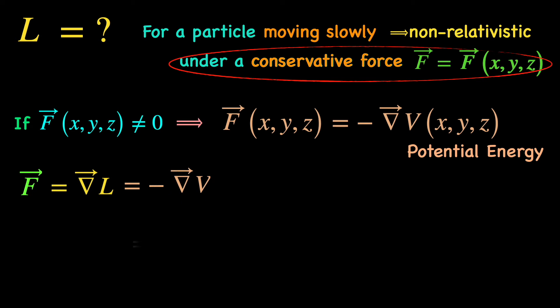So, a conservative force is given by the gradient of the particle's Lagrangian and also by the negative gradient of its potential. Need I say more? Obviously, the coordinate dependence of the Lagrangian of a non-relativistic particle under a conservative force is through the negative of its potential energy.